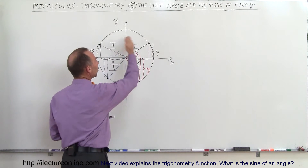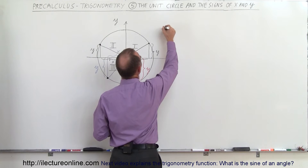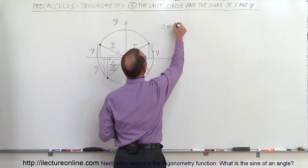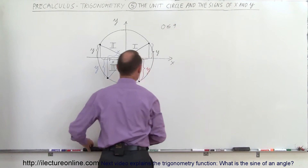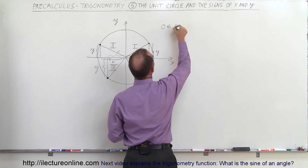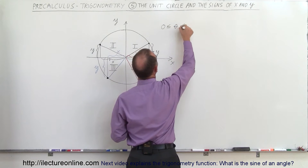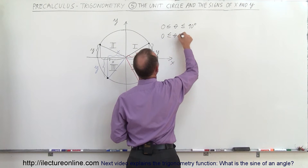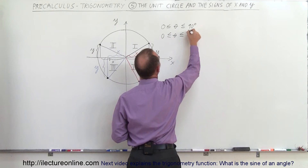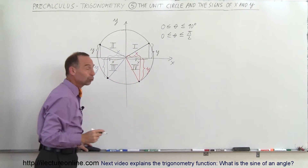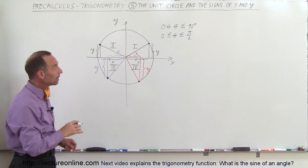In quadrant 1, the angle will be somewhere between 0 and 90 degrees — so 0 less than or equal to theta less than or equal to 90 degrees, or we can say 0 less than or equal to theta less than or equal to pi over 2. So either we express the angle in terms of degrees, or the angle in terms of radians.